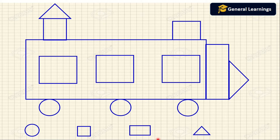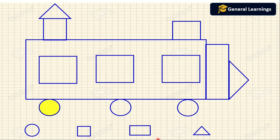Now we are going to count the number of shapes present in this picture. First we are going to count the number of circles: one, two, three. So the number of circles present in this picture is three.